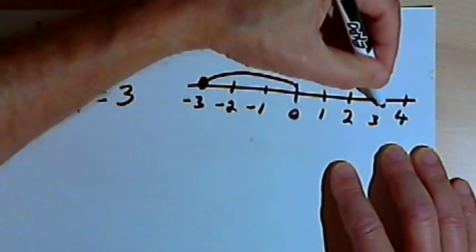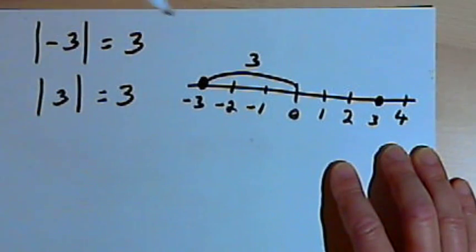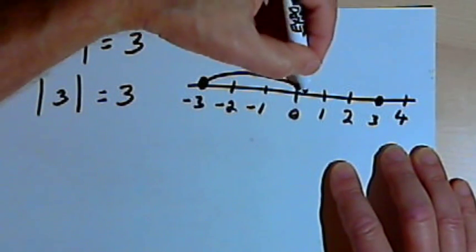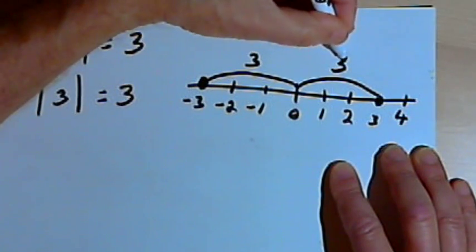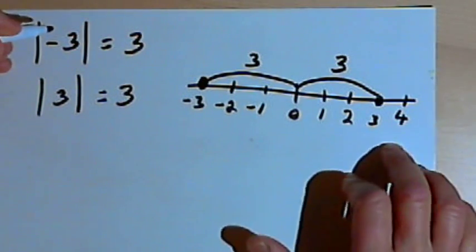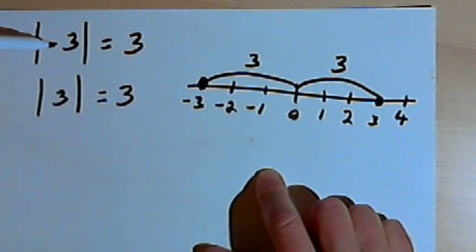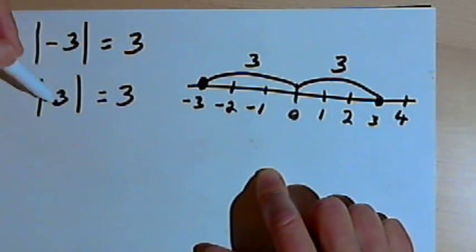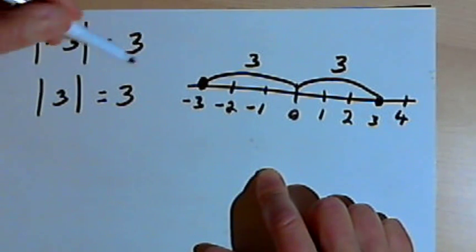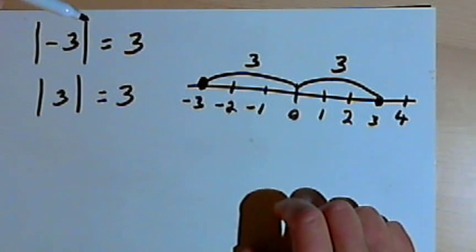And if I do the same thing for the positive 3, if I mark the positive 3 on the number line, and see how many units that is from 0, it's also 3. So sometimes we think of absolute value as distance. In this case, both negative 3 and positive 3 are the same distance from 0.